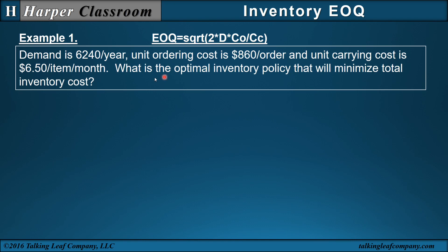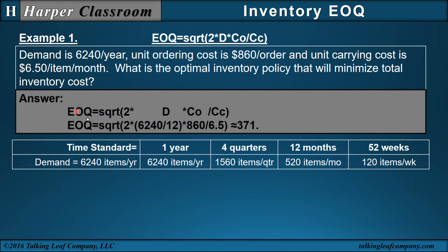Example 1: demand is 6,240 per year, unit ordering cost is $860 per order, and unit carrying cost is $6.50 per item per month. What is the optimal inventory policy that minimizes total inventory cost? That's EOQ. From the EOQ equation, demand is in years but carrying cost is in months, so we transform years to months by dividing by 12. Taking demand per month times the ordering cost of $860 divided by the carrying cost of $6.50 per month gives an EOQ of approximately 3.71.